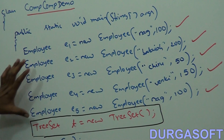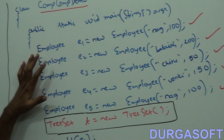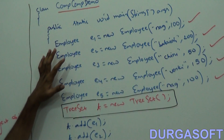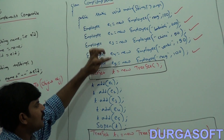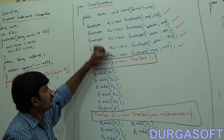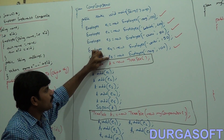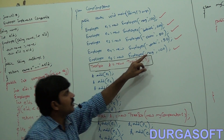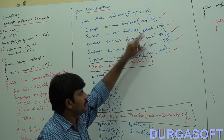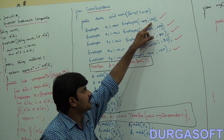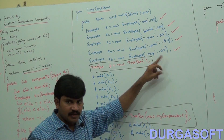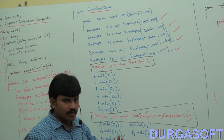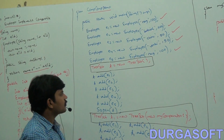We created 5 Employee objects. One small observation: E1 and E5 both have the same name and the same ID — they are duplicate objects.